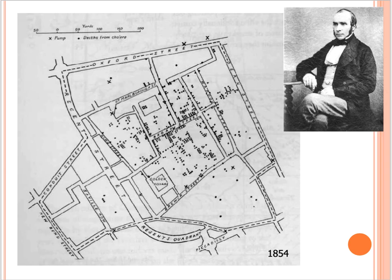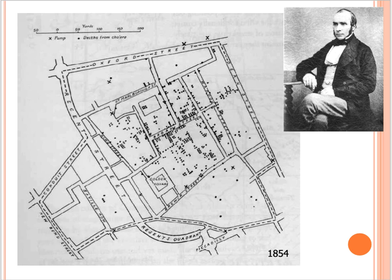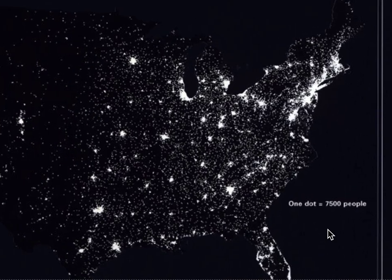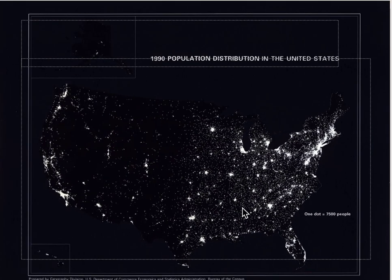Here is one of the earliest maps created — a map of cholera distribution in the United Kingdom. It is a dot density map where a single dot shows deaths from cholera and an X marks specific pump locations. John Snow mapped this cholera outbreak in London in 1854. Here is another population density map showing the 1990 population distribution in the United States, where one dot equals 7,500 people, showing denser regions compared to others.